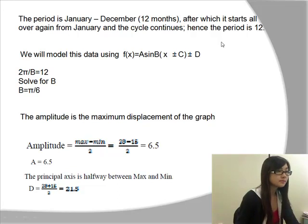Now we have to try to find an algebraic expression using the sine model. So we'll use f(x) = A sin B(x ± C) ± D.